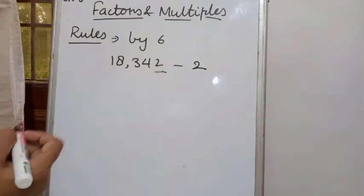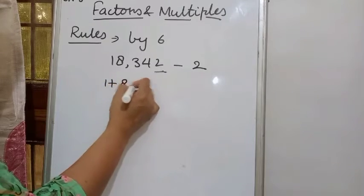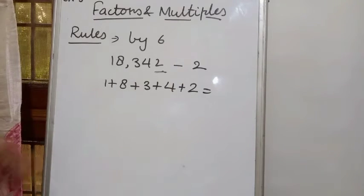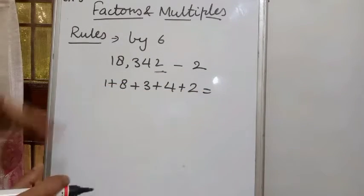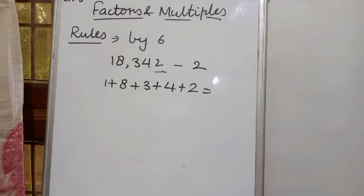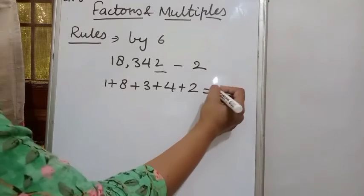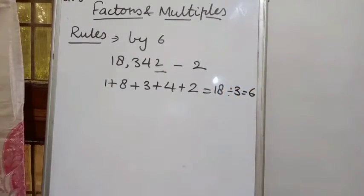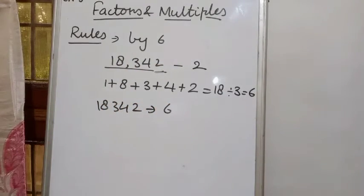So we can say this number is divisible by 2. Now check whether it is also divisible by 3. For divisibility by 3, we add all the digits. If the sum of all digits is divisible by 3, the whole number is also divisible by 3. So 1+8+3+4+2 = 18, and 18 is divisible by 3 (6 times). So we can say the number 18342 is divisible by 6.